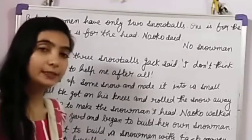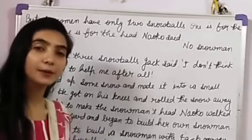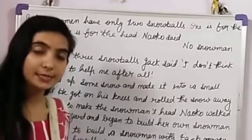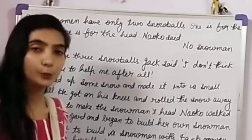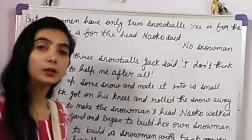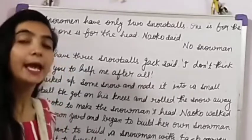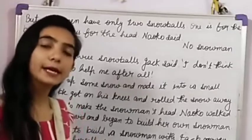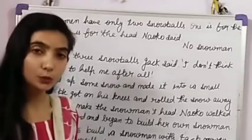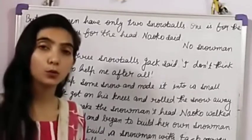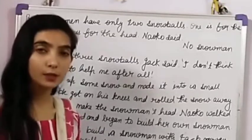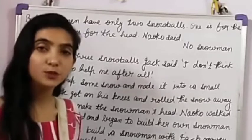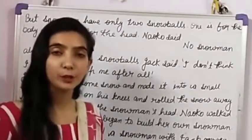Jack apne front yard mein gaya, ghutno pe baitha, aur snow roll karna shuru kiya. Naoko ne window se dekha aur apni mother se pucha: 'Kya main bahar jaakar Jack ki madad kar sakti hoon?' Naoko's mother ne kaha it is very cold outside — 'are you sure you want to go out?'